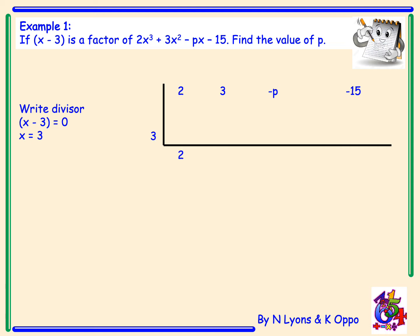So, bringing the number 2 down, 2 times 3 is 6, 3 plus 6 is 9, 3 times 9 is 27, negative p plus 27 can be written as 27 take away p. And then multiply by 3 will give 81 take away 3p. I'm going to put the remainder as 0 because x minus 3, we were told, was a factor. Therefore, we can assume the remainder is 0.